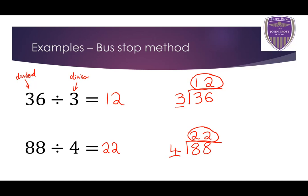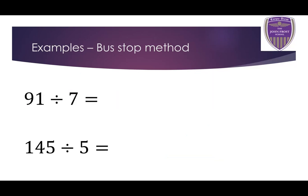Let's have a look at a few more examples. 91 divided by 7. Again, I'm going to start off writing the divisor, which is 7, and then I'm going to write the dividend, which is 91, under the bus stop. How many 7s are in 9? Well, there's only one 7 in 9, and there's going to be a remainder of 2.